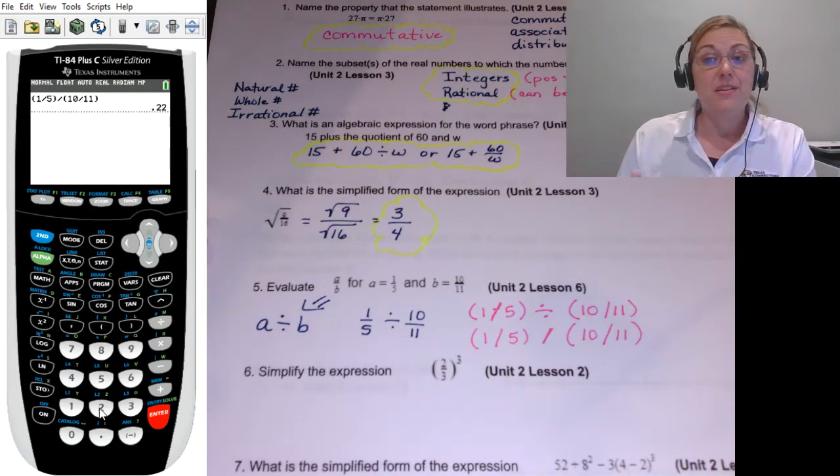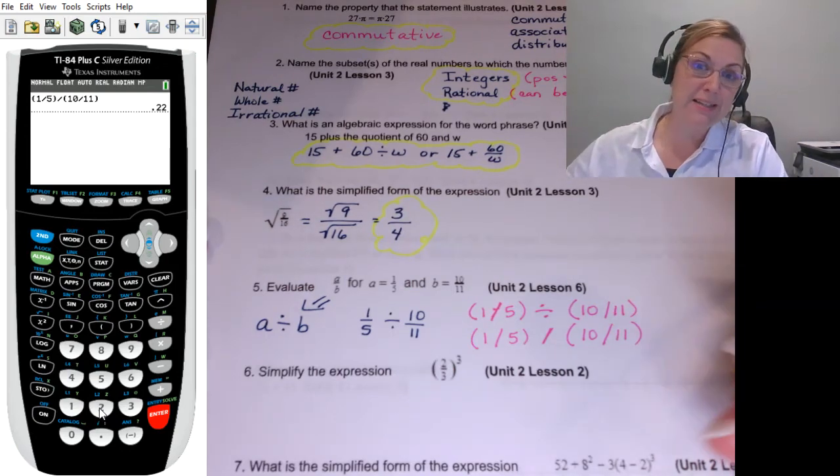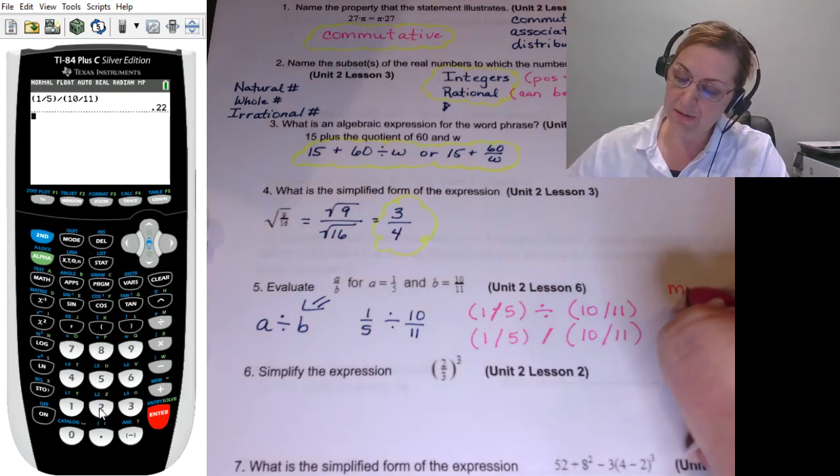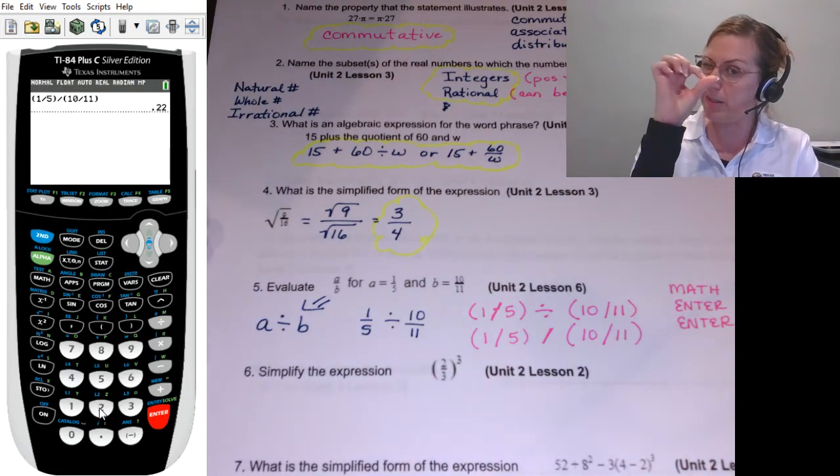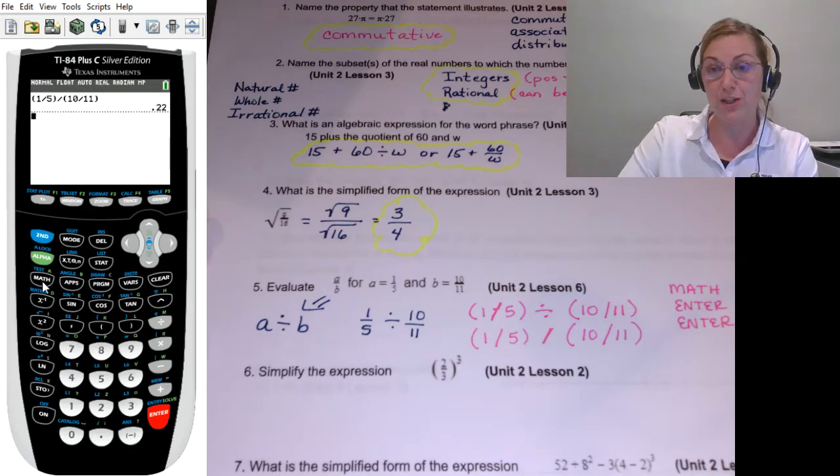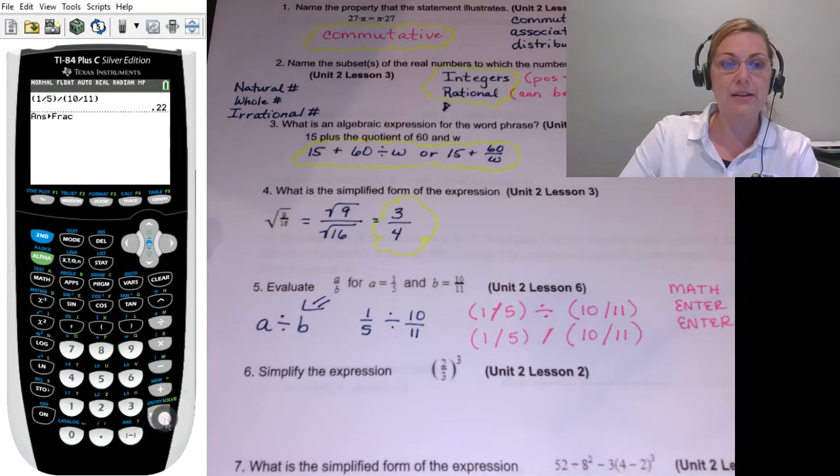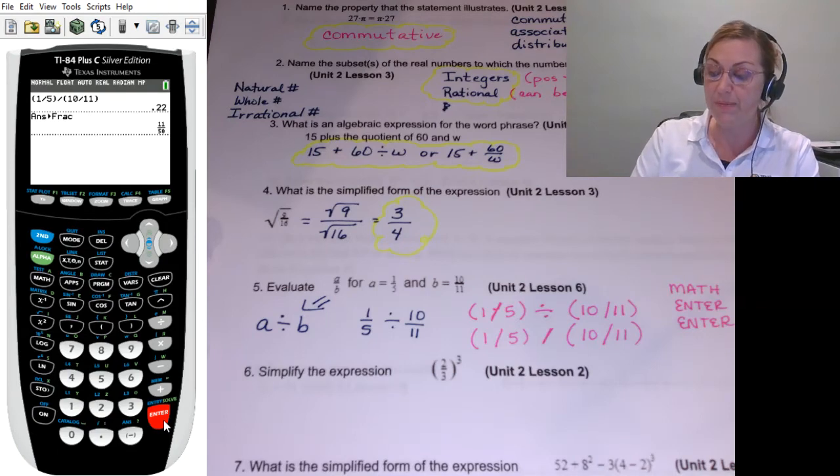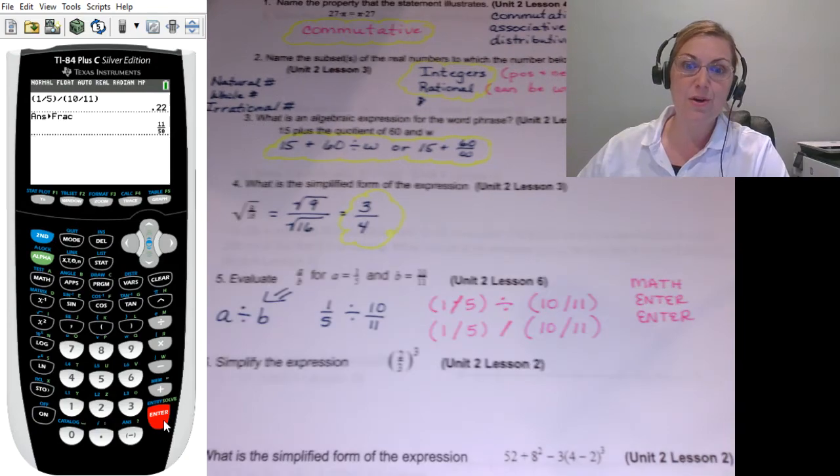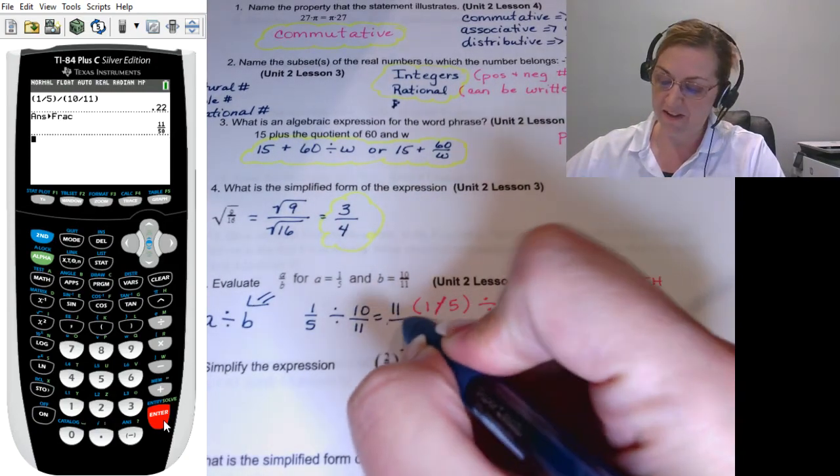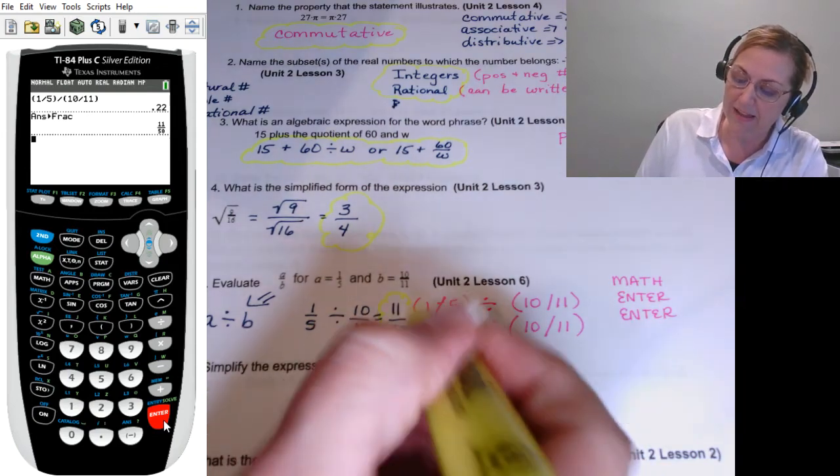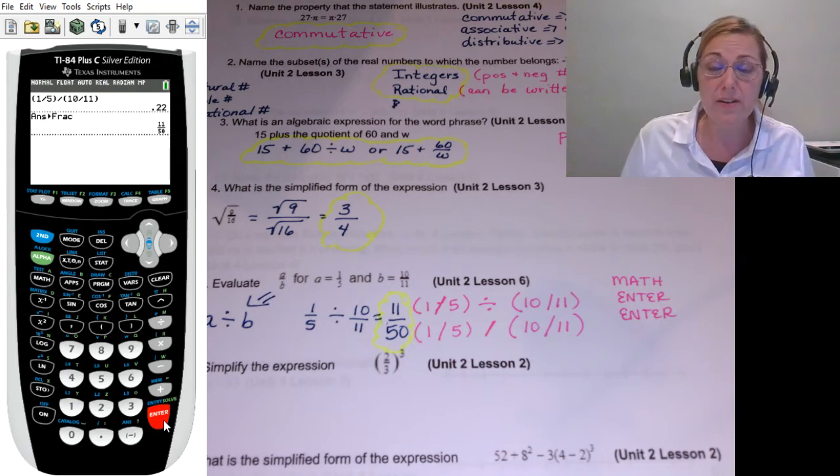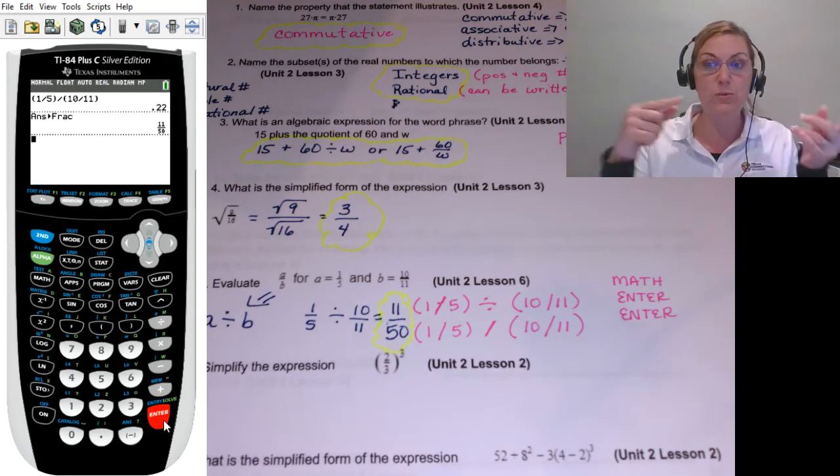Now, chances are the multiple choice is not going to be a decimal. So you need to know how to tell the calculator, give me a fraction instead. And you're going to use these buttons: math, enter, enter. Now, my friends who are using the Desmos calculator, Desmos puts a little fraction button right beside the decimal answer, and you just click it, and Desmos will convert it to a fraction for you. So let's click math, enter, enter, and see how the calculator can give me what I need if I will tell it what I need. So I get 11 50ths. And again, I didn't do the whole - if you remember back from earlier math classes, I didn't flip the fraction and multiply and all this. I could have. But if I know how to use my calculator, I tell it what I need, it will do the heavy lifting for me.